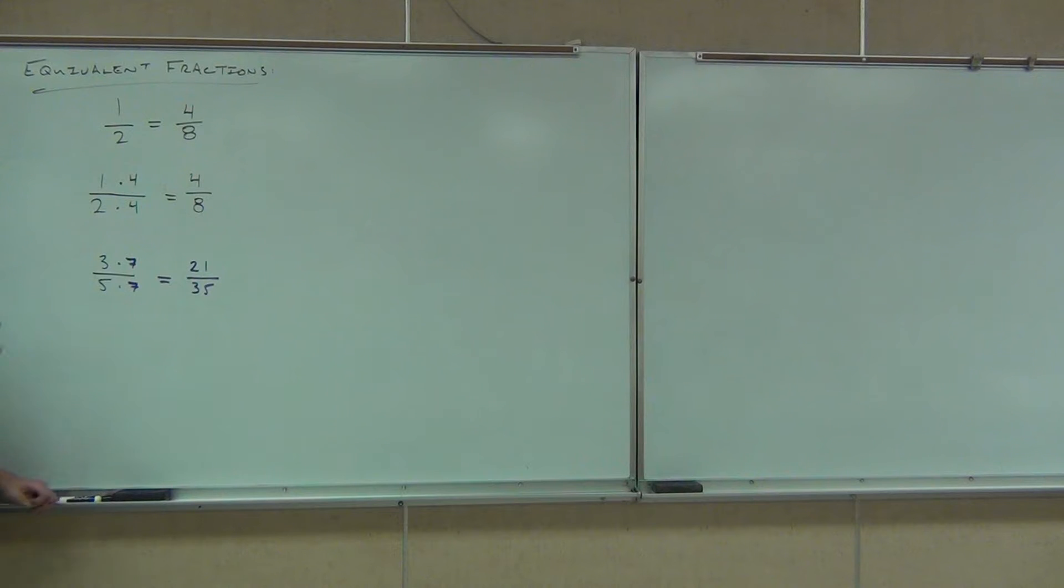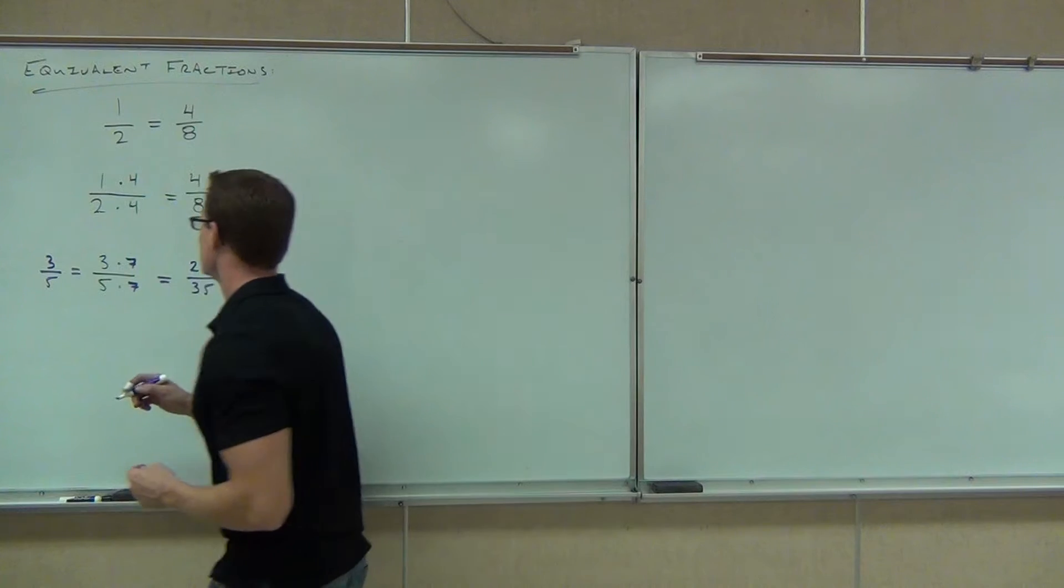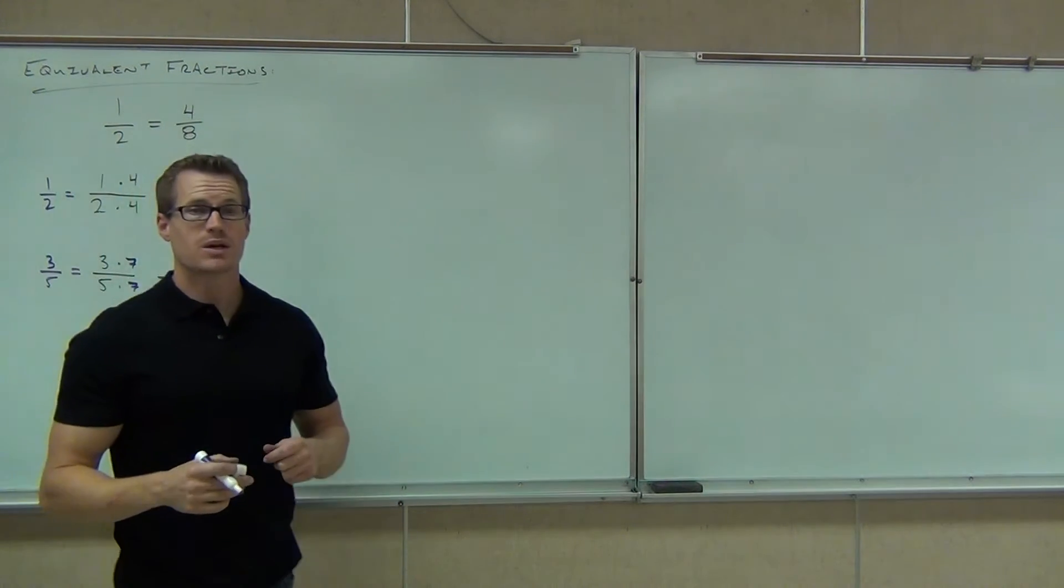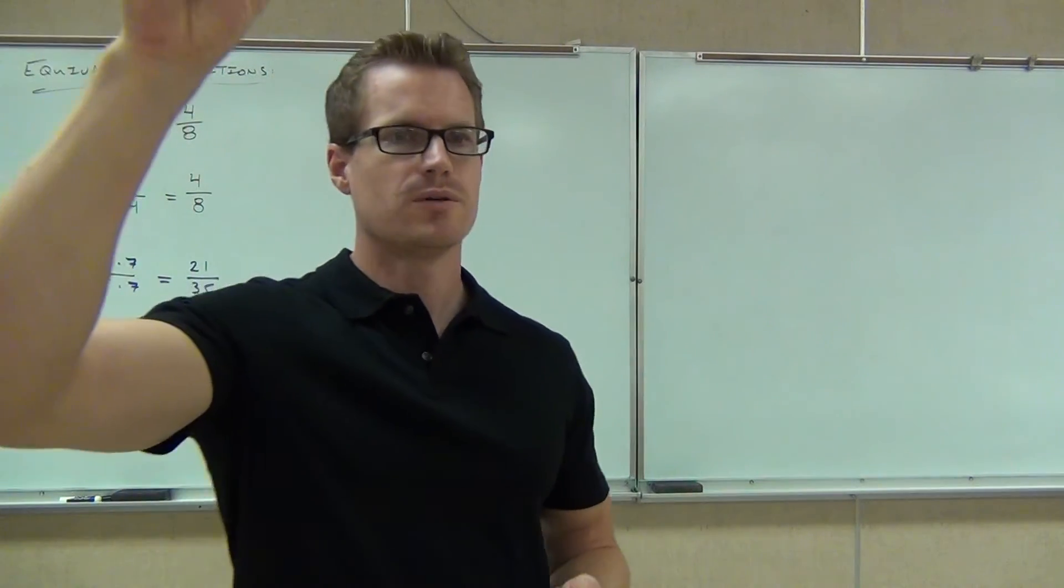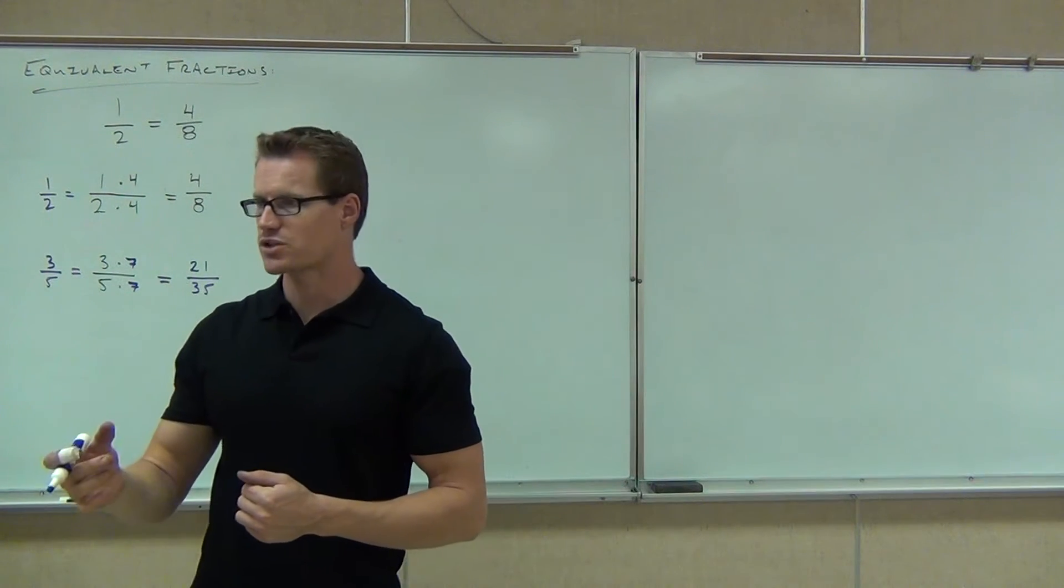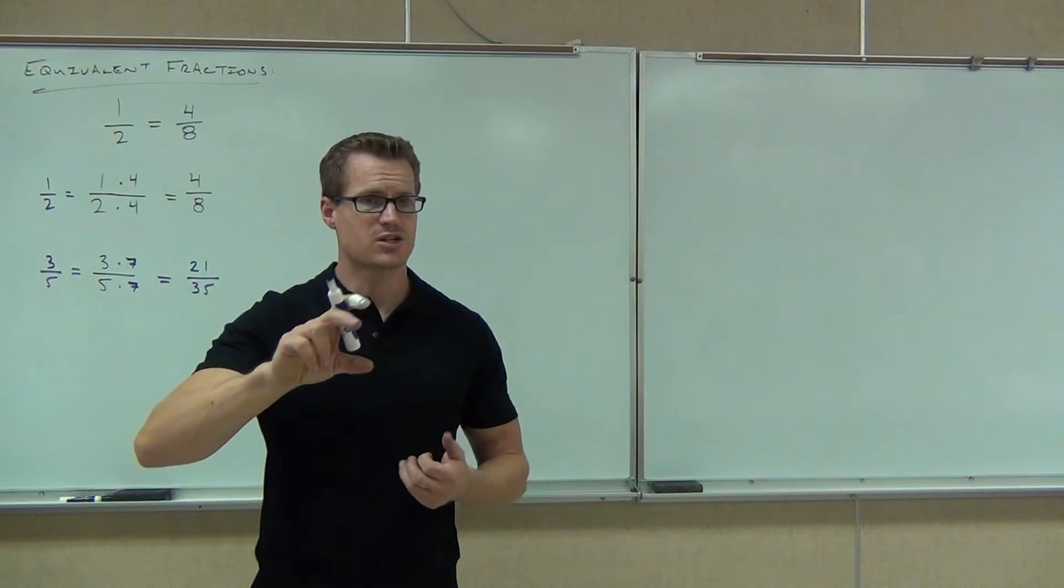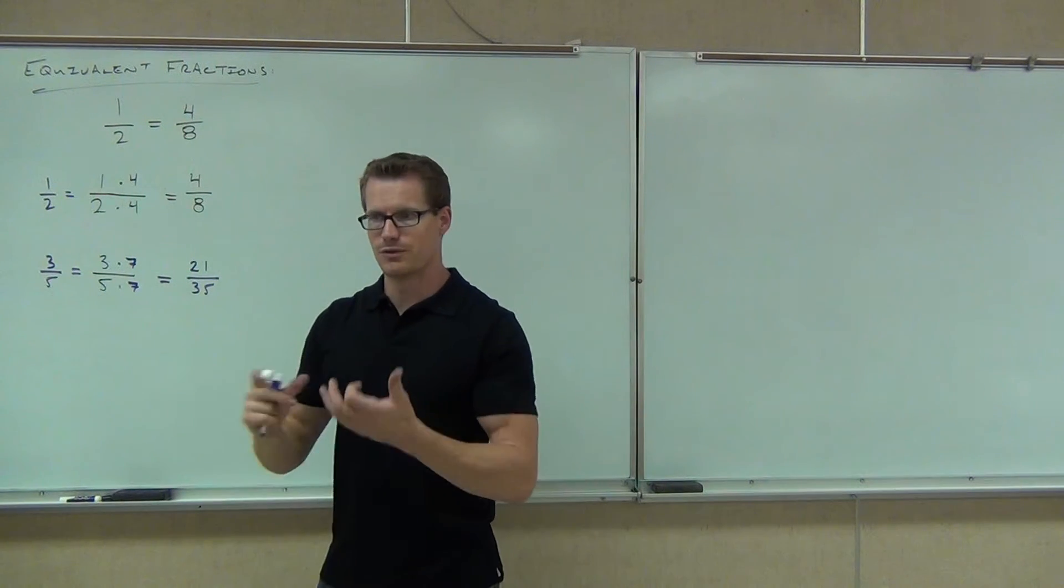Guess what? I can guarantee you that 3 fifths and 21 over 35 are exactly the same value. I can guarantee you that 1 half and 4 eighths are the same value. Because here's what we should know about fractions. We can multiply both the numerator and denominator by the same number and you will have an equivalent fraction. As long as I multiply both the top and the bottom by the same thing, for example, 4 over 4 or 7 over 7, I can make an equivalent expression.